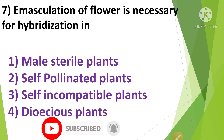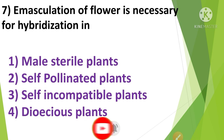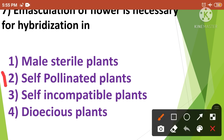Next question: Emasculation of flower is necessary for hybridization in — 1st option male sterile plants, 2nd option self-pollinated plants, 3rd option self-incompatible plants, 4th option dioecious plants. The correct answer is option 2nd, self-pollinated plants. Emasculation of flower is necessary for hybridization in self-pollinated plants.